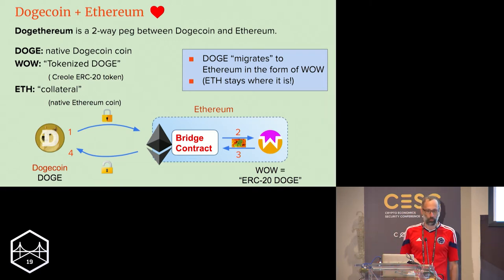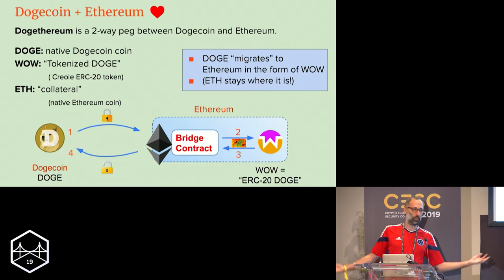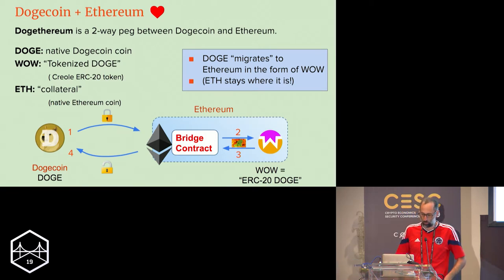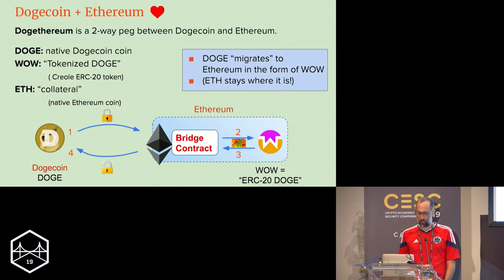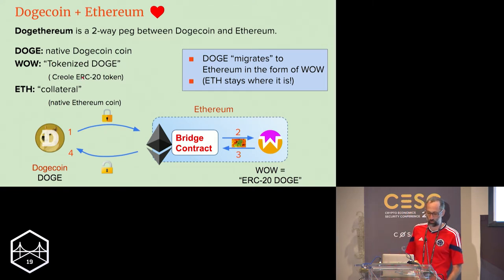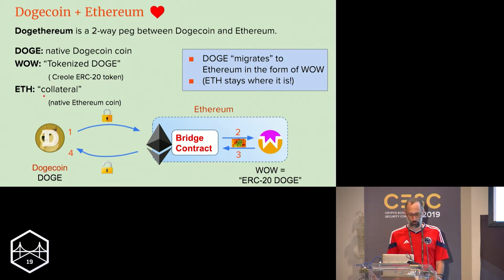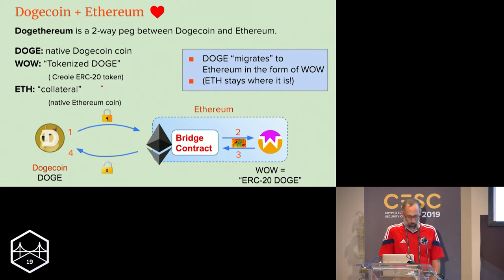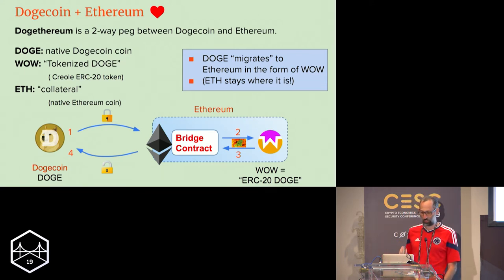Dogecoin is just a regular blockchain, like Bitcoin — no smart contracts or anything like that. When the Doge comes over and crosses into Ethereum, it becomes a token called Wow, which I call a tokenized Doge, formally an ERC-20 token. And of course, you also have Ether that sits on the Ethereum blockchain, which functions as the collateral in this bridge.